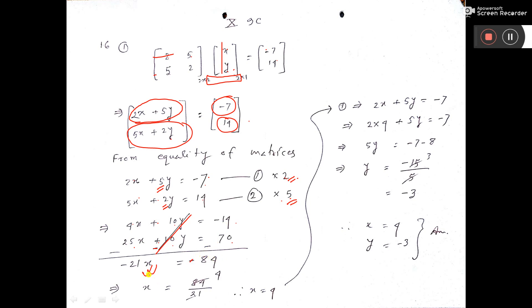Now this minus, this minus will cut from both sides. 21 will go that side. You do cancellation. So value of x is coming 4.